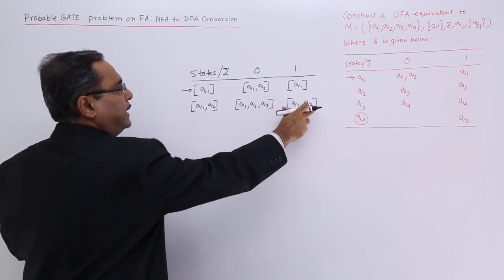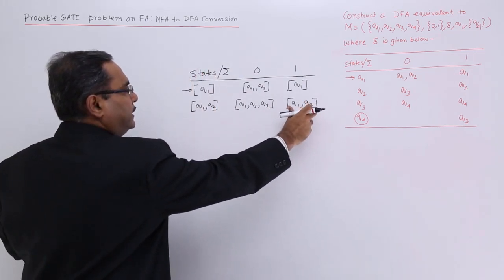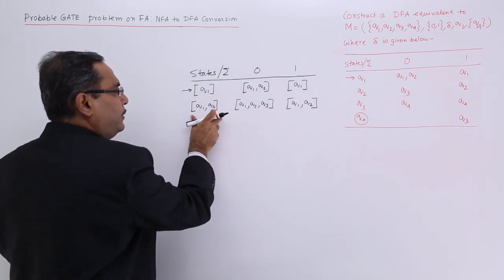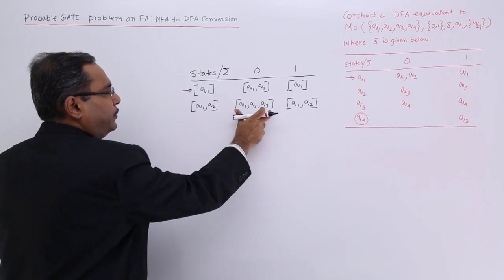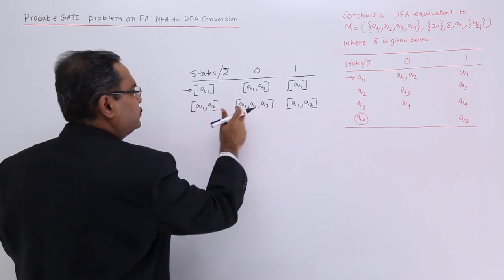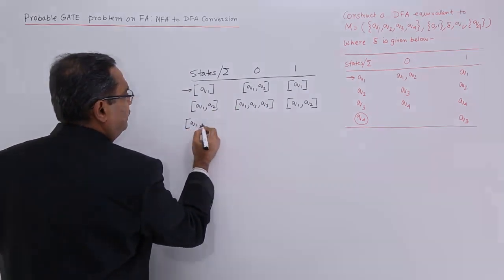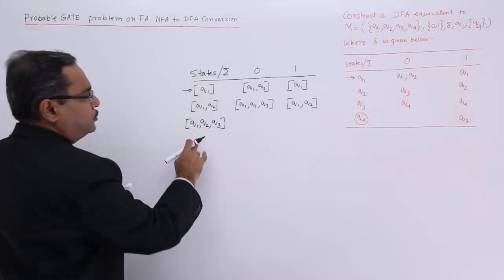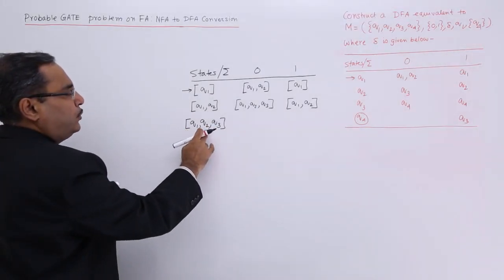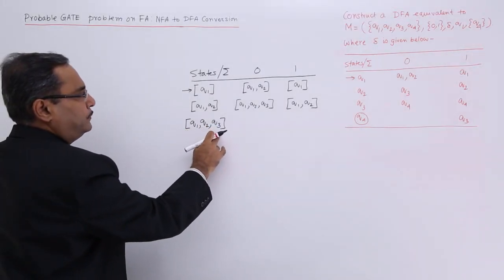For the state {q1, q2} with input 0: q1 on 0 gives q1 q2, and q2 on 0 gives q3, so I am getting {q1, q2, q3}. For {q1, q2} with input 1: q1 on 1 gives q1, q2 on 1 gives q2, so I am getting {q1, q2}. That is one state and that is another state. The state {q1, q2} has already been marked, so I am left with the new state {q1, q2, q3}. Let me mark that one.